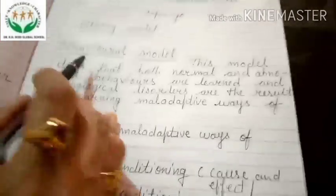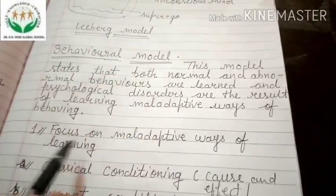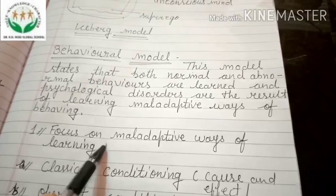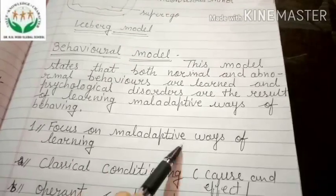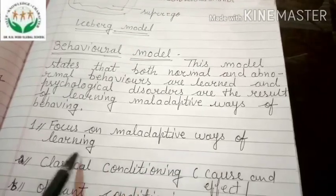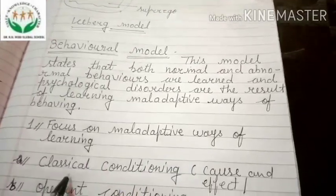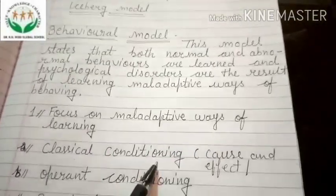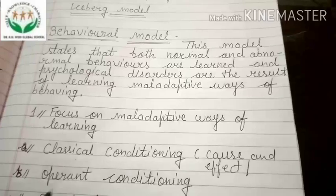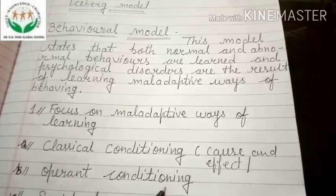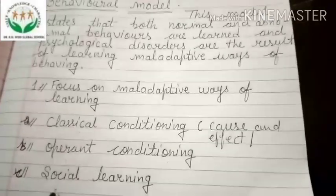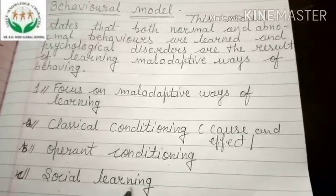The Behavioral Model includes a focus on maladaptive ways of learning, classical conditioning, operant conditioning, and social learning.